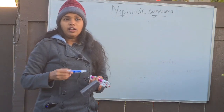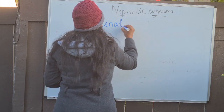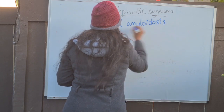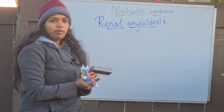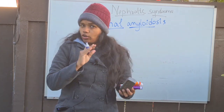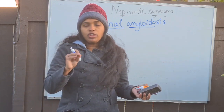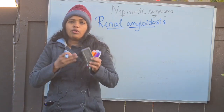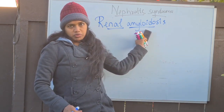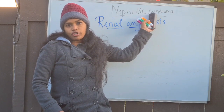Today we are going to see about renal amyloidosis. So what exactly happens in renal amyloidosis? Let us derive from the name. Amyloidosis is nothing but a protein condition where normally proteins should undergo metabolism in the body following a normal process. But instead, some proteins get abnormally folded and abnormally deposited. When that happens in the renal, we call it renal amyloidosis, and this is one of the important causes for nephrotic syndrome.